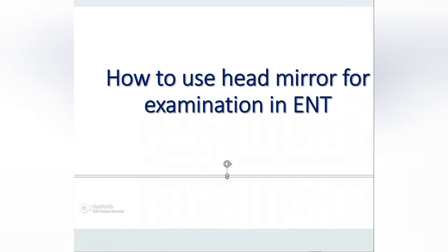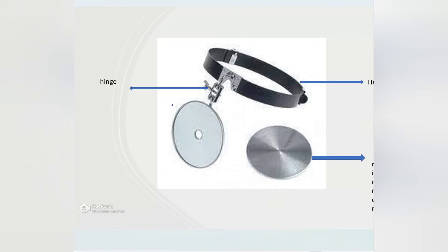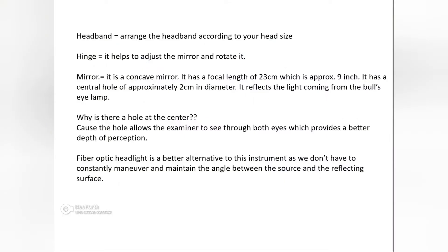Let's get started with the head mirror. This is what a head mirror looks like. First I'll explain theoretically and then show you a video as well. Here is the headband, then this is the hinge — it helps to rotate the mirror and put it in a proper position. This is the mirror. The headband can be arranged according to your head size, which helps to adjust and rotate the mirror.